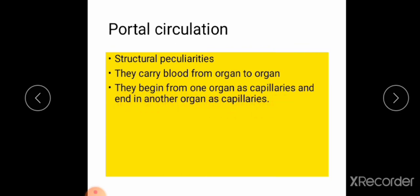They begin from one organ as capillaries and end in another organ as capillaries. We studied three types of blood vessels: artery, vein, and capillaries. So here, portal vein begins from one organ — for example, the small intestine — as a capillary. Afterwards, all the capillaries join together to form a vein. But when it reaches another organ, such as the liver, it is again changed into capillaries. This is the structural peculiarity of portal vein.